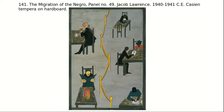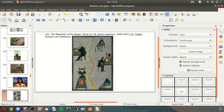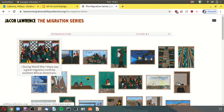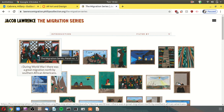His parents migrated from the south to New Jersey and Pennsylvania, and then he grew up in Harlem, so his family would have had this experience firsthand. There's a great website — lawrencemigration.com or phillipscollection.org — where you can look at the panels, all titled with sentence-long titles. The first one shows migrant workers traveling, getting work where they can.